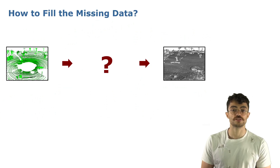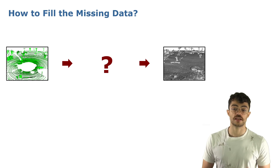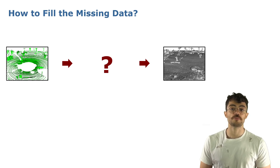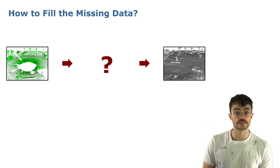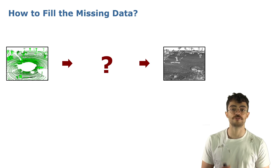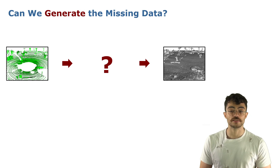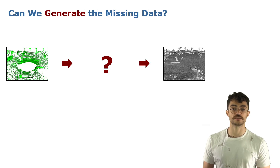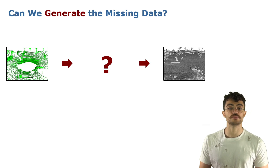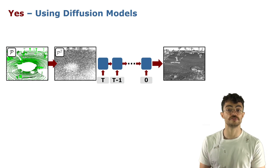The central question behind scene completion is how to fill the missing data. Previous approaches have done that using signed-distance field representations or by predicting occupancy over a voxelized scene. But in this paper, we rephrase the central question as: can we generate the missing data? We can think of it as a generative task — given a partial observation of the scene, we want to generate what is missing from it. And the answer is yes, and we do that using diffusion models.